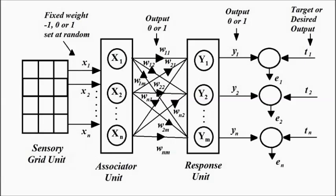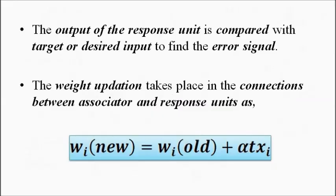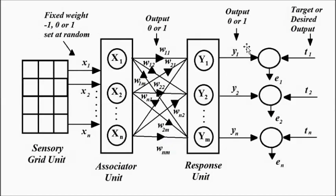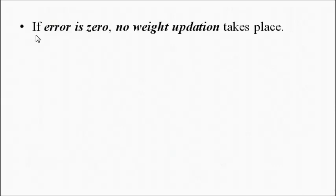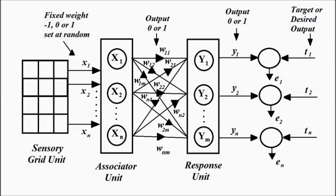This is how weight updation takes place between the associator and response unit. Depending on the error signal, suitable adjustments are made to the weights so that the actual output of the network matches the target or desired output through suitable parametric adjustments. When the error becomes zero, no weight updation takes place, meaning the objective is accomplished. This is the basic principle of the perceptron network — the generalized block diagram and the whole neural network structure with sensory unit, associator unit, and response unit. I hope you liked this video. Please subscribe to Engineering Tutorial for more videos related to engineering, science, and technology. Thank you.